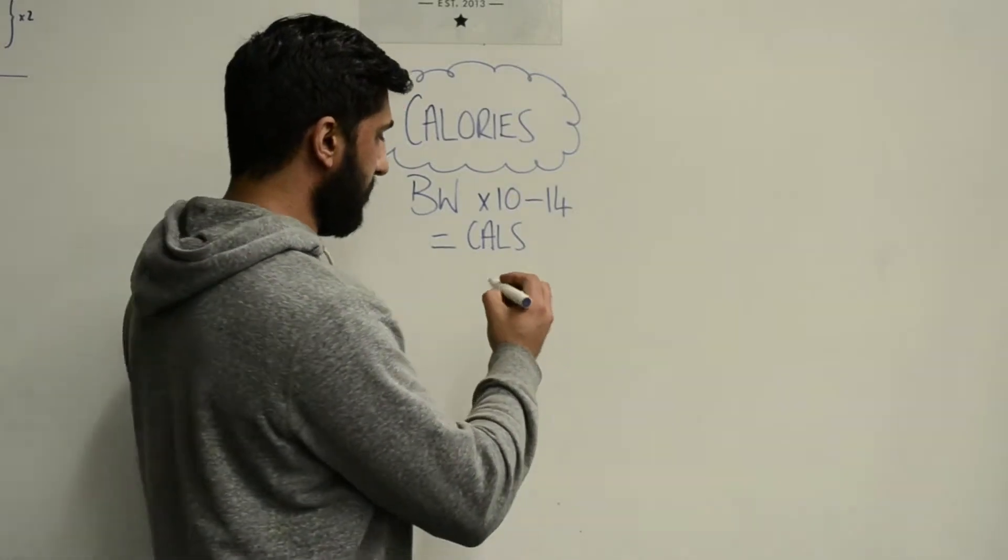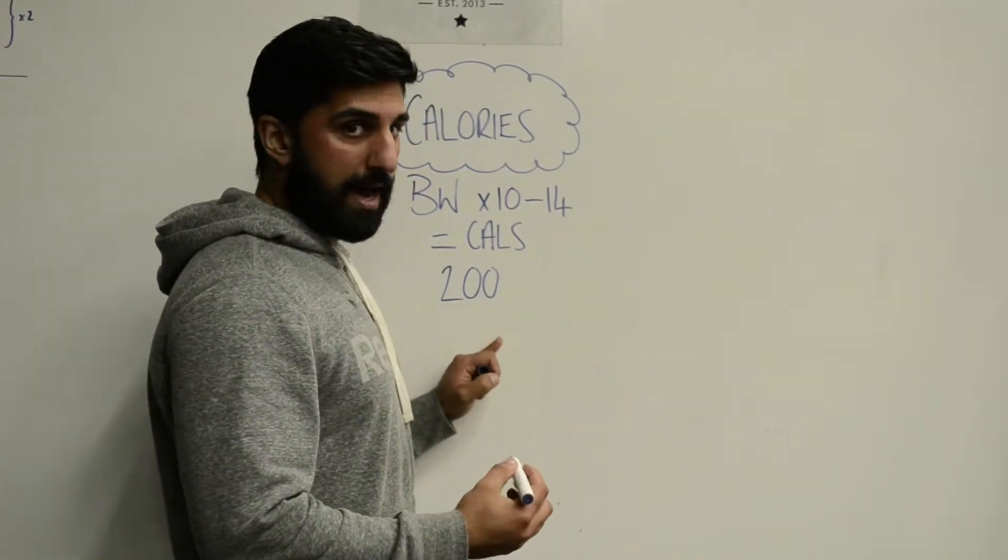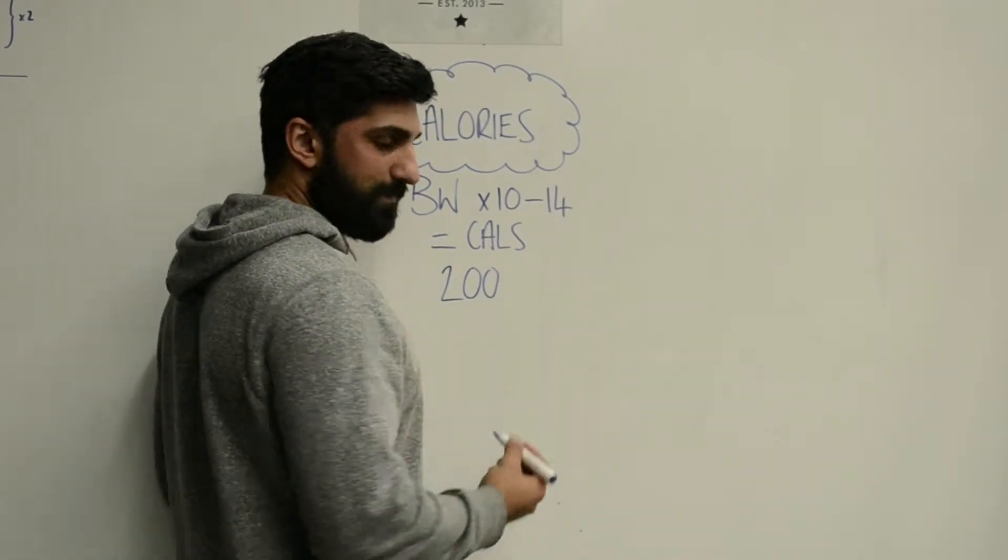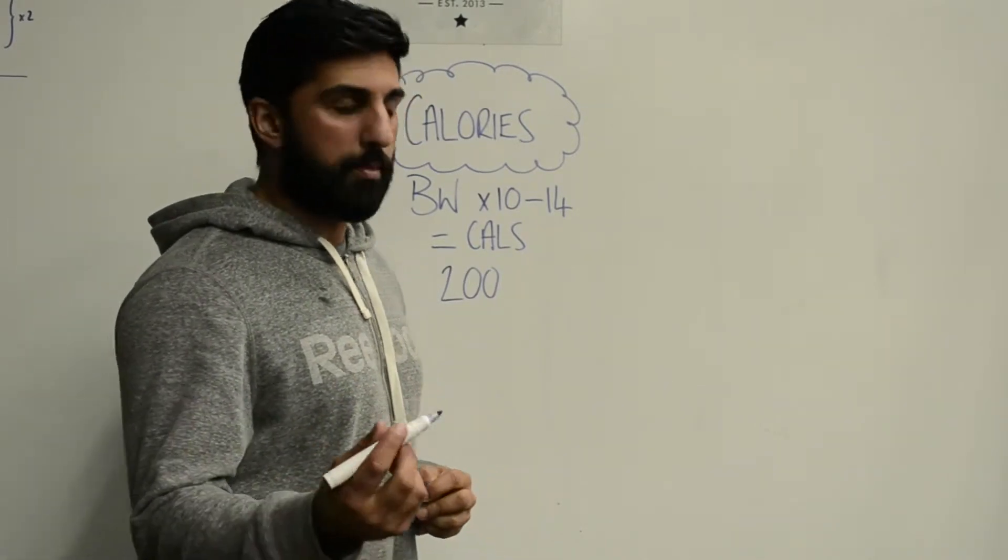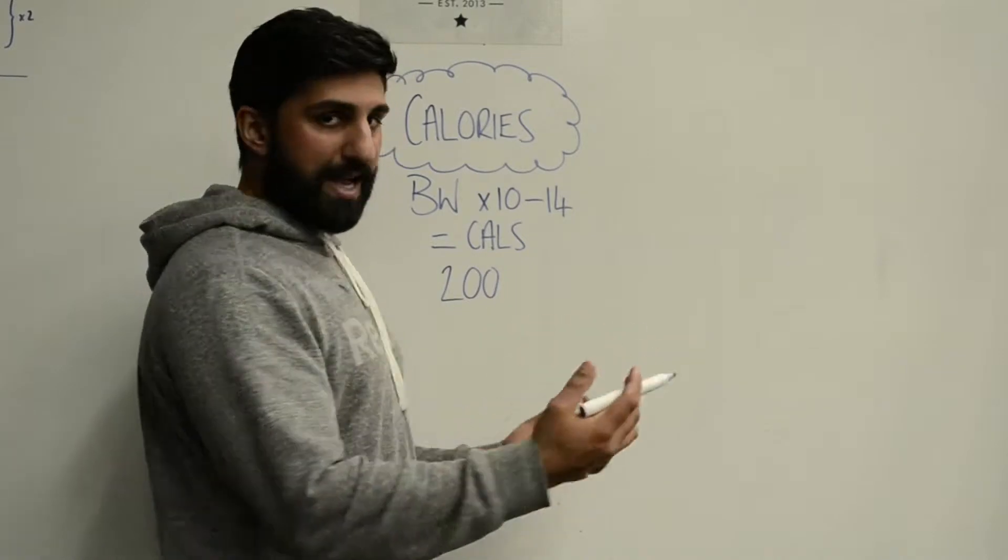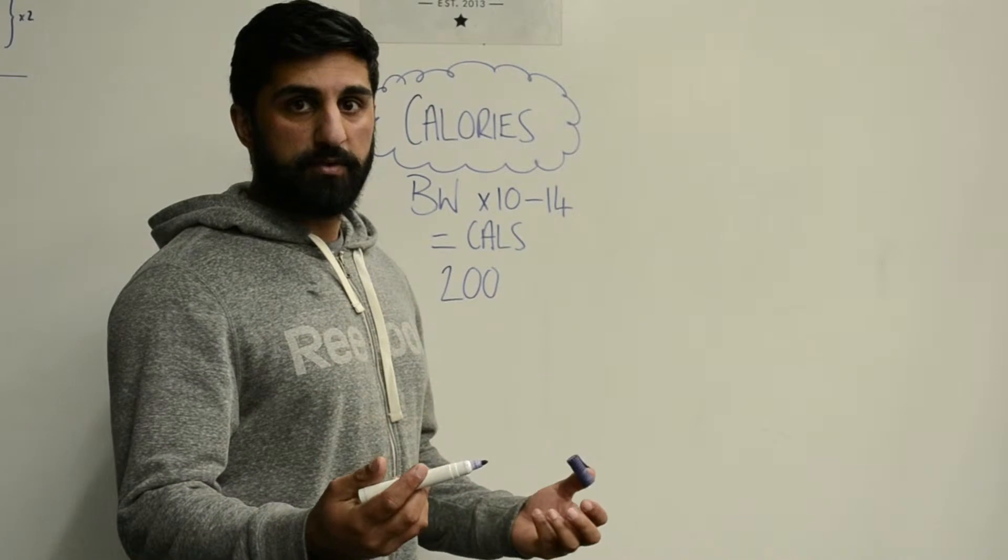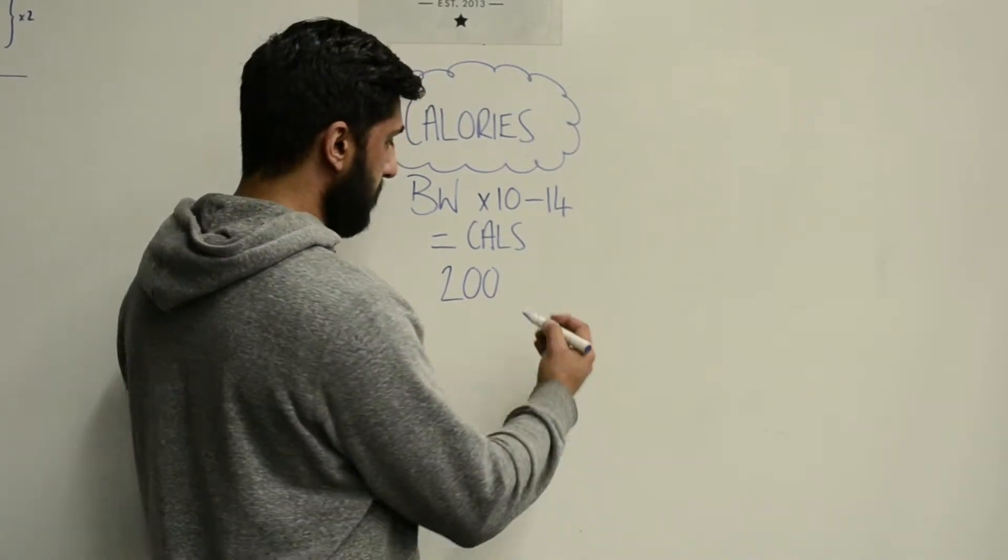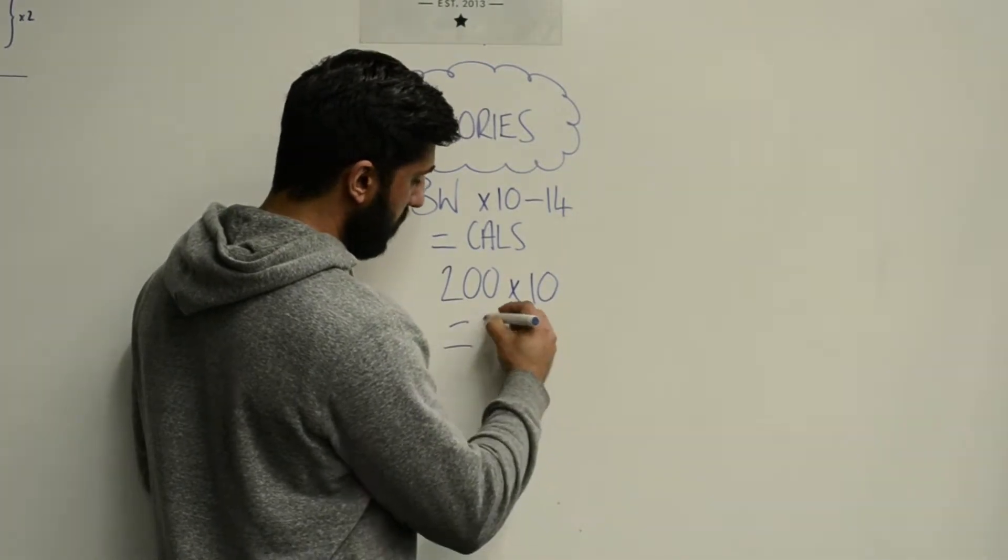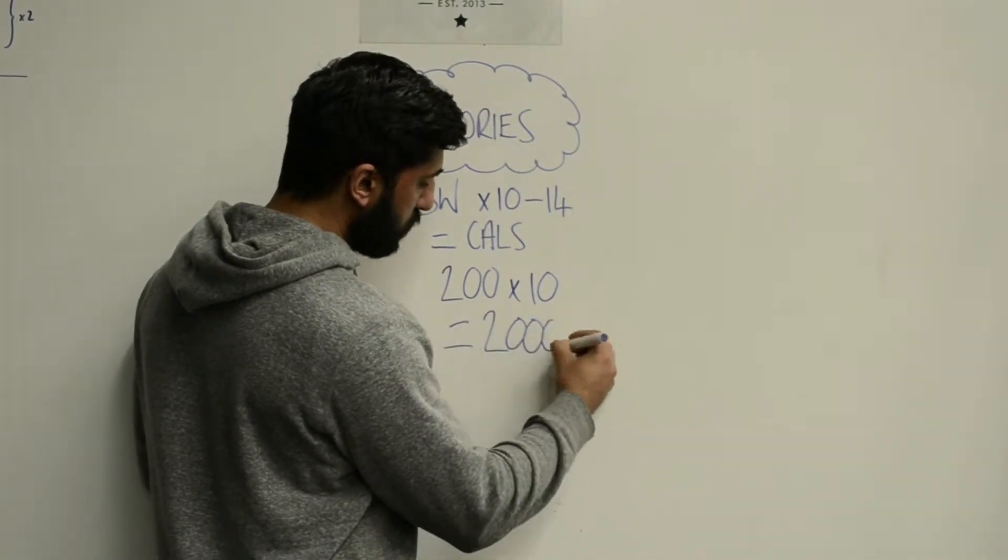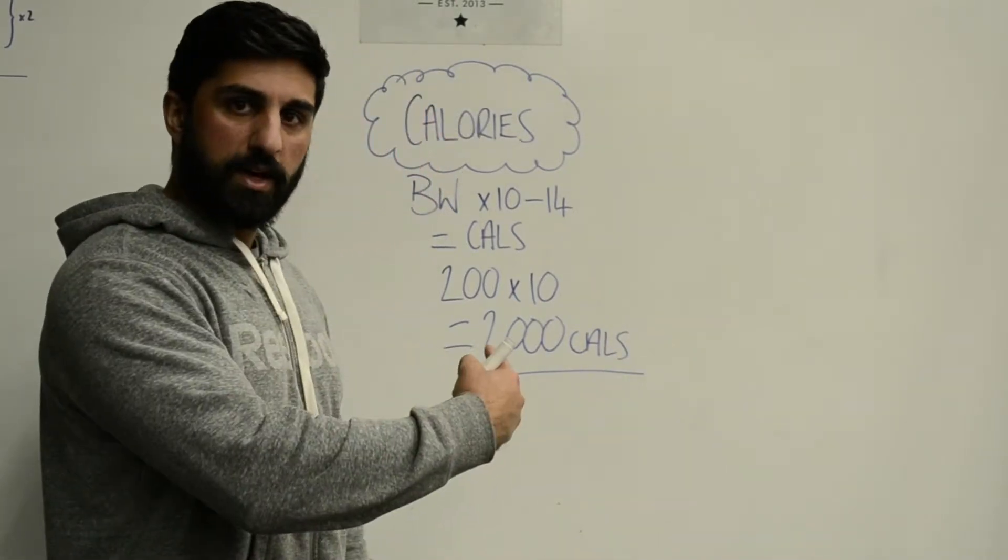As an example, to keep it really simple, if someone comes to me and is 200 pounds, no exercise, completely sedentary job, I'm going to take 200 and multiply it by 10 and that will give them 2,000 calories. That's how you work out calories.